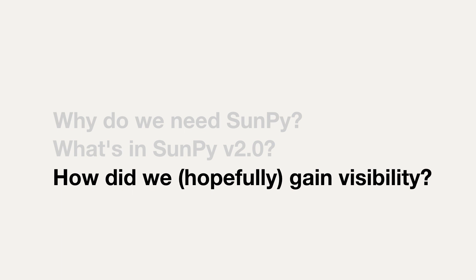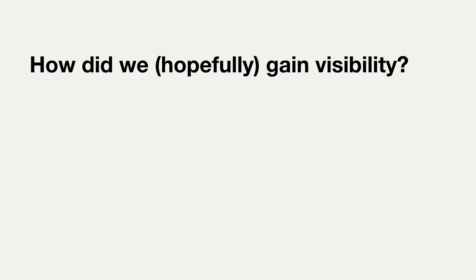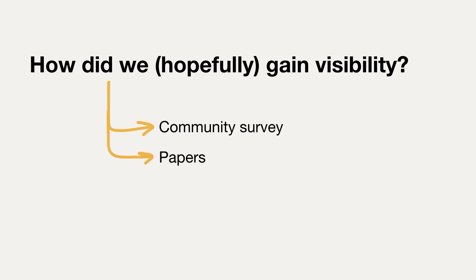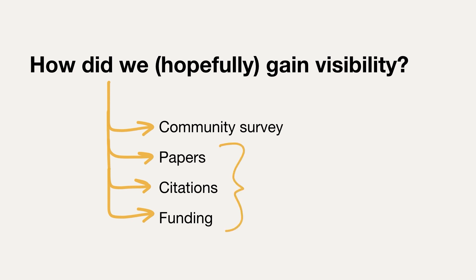My last section is: how did we hopefully gain visibility in the solar physics community? In the last year, we've made progress in four categories: we surveyed the solar physics community, we published papers and accumulated citations, and we won some funding. These three accomplishments really get the attention of the academic community, and this concept of using them to hack prestige has worked really well for us in the SunPy project.